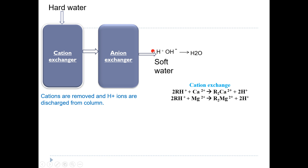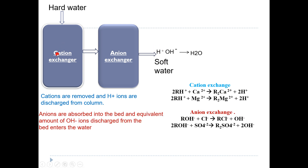After the cation exchanger removes the cations, the water now contains only H+ ions. This water is then passed into the anion exchanger, where anions get exchanged for OH–. The OH– ions present on the resin are exchanged by other ions like chloride, sulfates, and nitrates. This is the only process where anion exchange also takes place — unlike the previous two water softening processes.